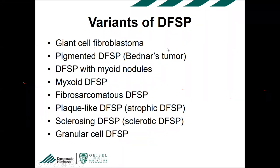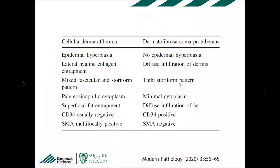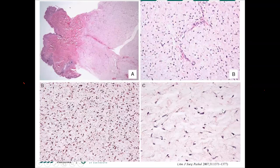There are many variants of DFSP: giant cell fibroblastoma (equivalent in children), pigmented (Bednar tumor), DFSP with myoid nodules (most commonly with fibrosarcomatous transformation), myxoid DFSP, fibrosarcomatous plaque-like, sclerosing DFSP, and granular DFSP. Classic differentiating features from cellular dermatofibroma include: no epidermal hyperplasia, diffuse dermal and fat infiltration, tight storiform pattern, SMA negative, CD34 diffusely positive.